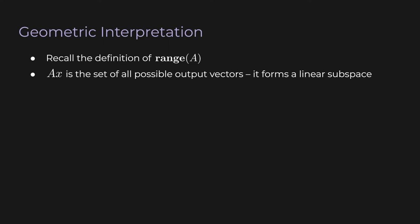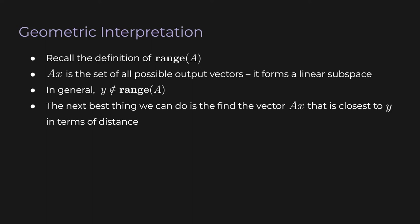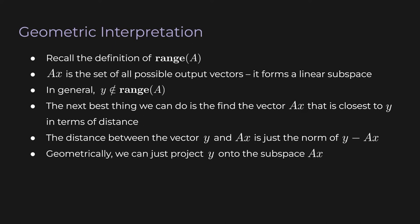So the thing is the y that we pick for the equation y equals Ax, that y that's given to us, it might not be in the range of A. It might be outside of that linear subspace that is the range of A. Again, the next best thing that we can do is to find the vector Ax that is closest to y in terms of distance, in terms of ordinary Pythagorean distance. But here's the thing. The distance between the vector y and Ax is just the norm of y minus Ax. So geometrically, we can just project y onto the subspace Ax. So this last sentence might be tough to visualize. So let's look at a 2D example.